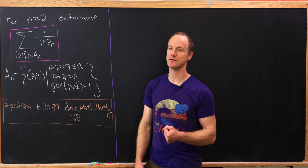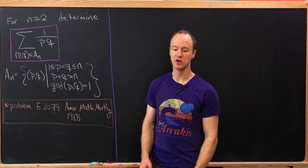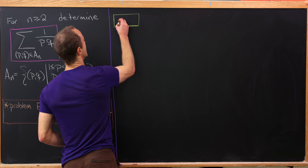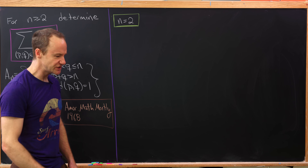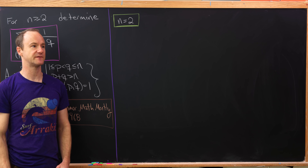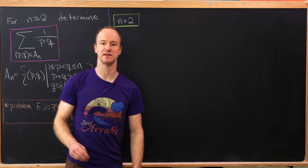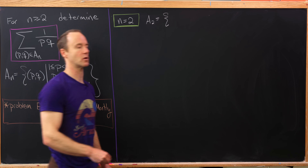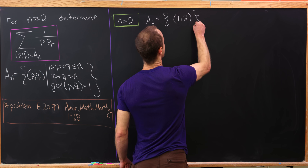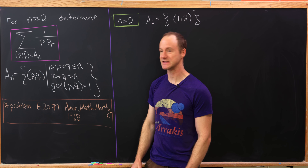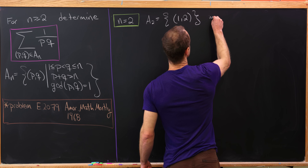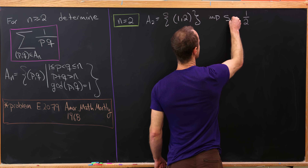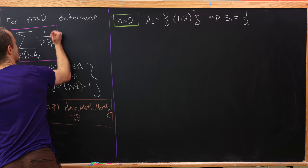In order to get an idea of what's going on and potentially see a pattern in these sums, we should do some examples. Let's start with the smallest possible case, n equals 2. The hard part is finding the set A_n, and then we just compute the sum. A_2 contains only the ordered pair (1, 2), so the sum is exactly one term: one half. Let's call this S_2.